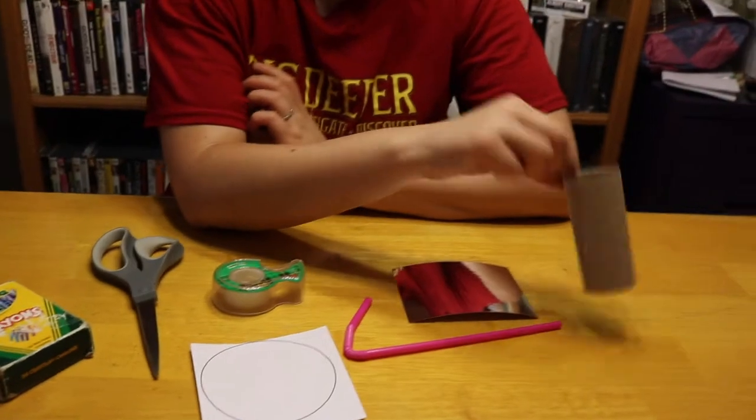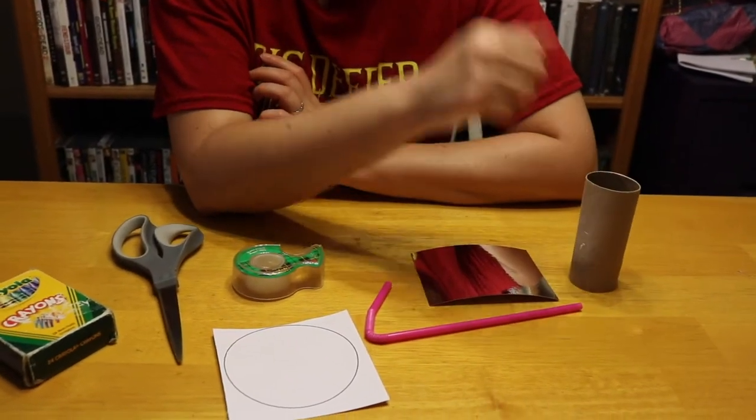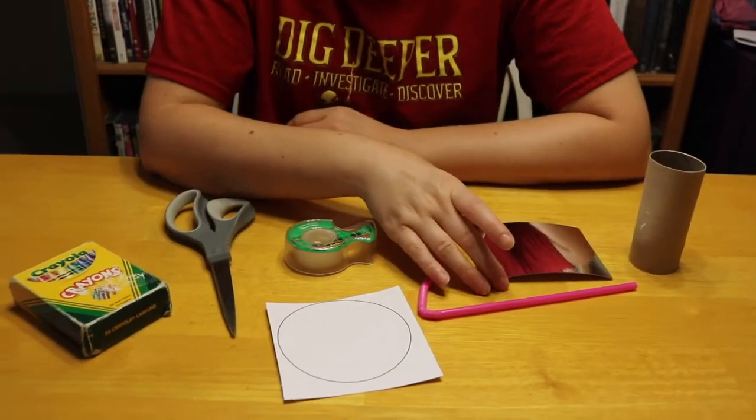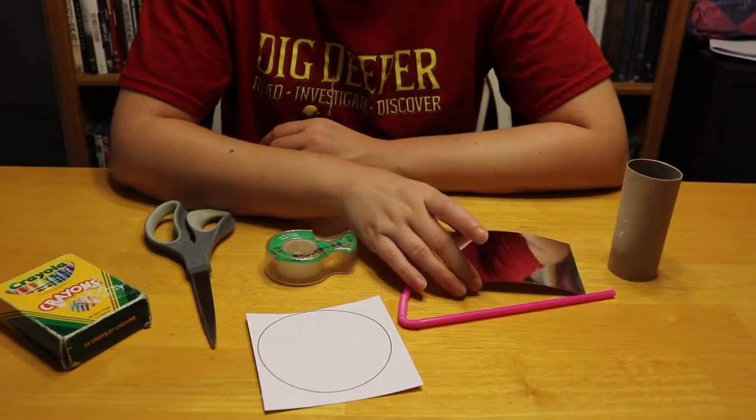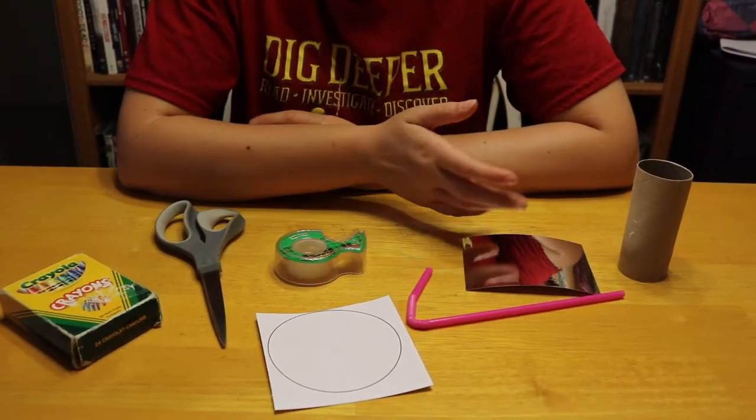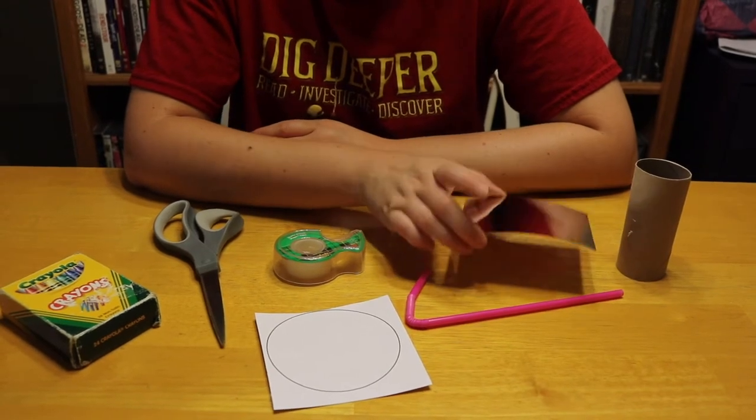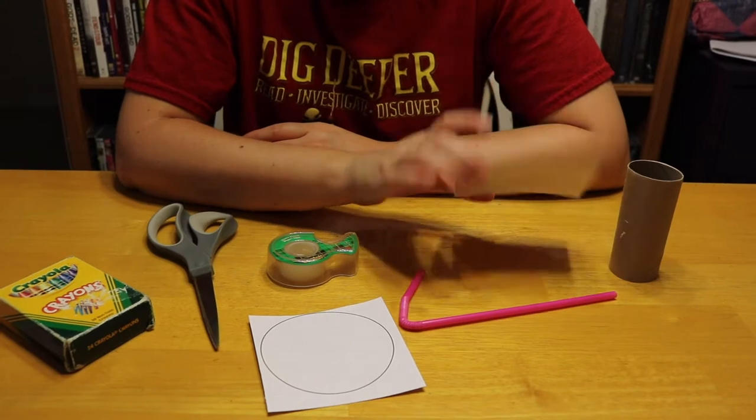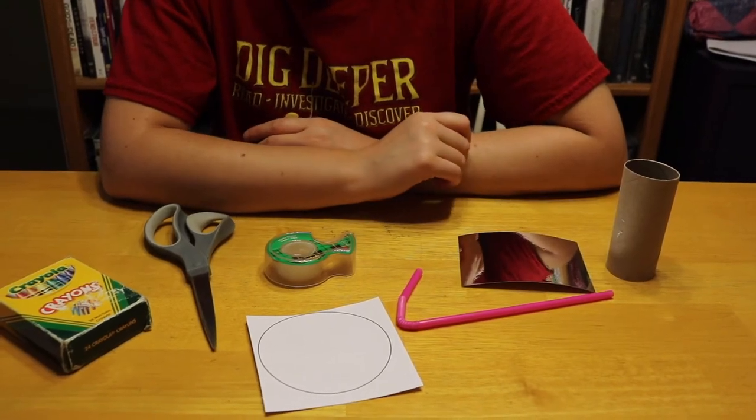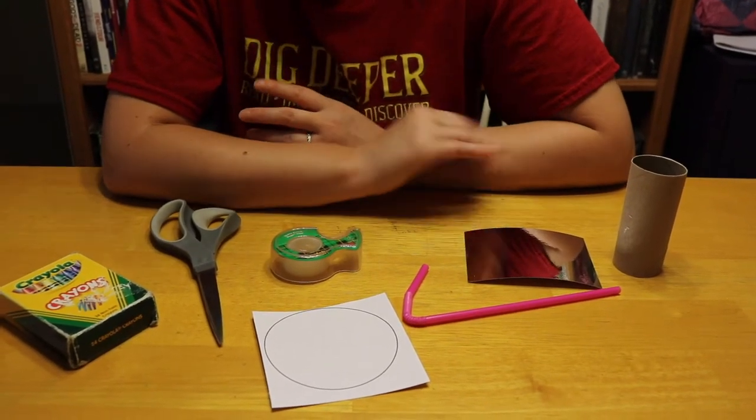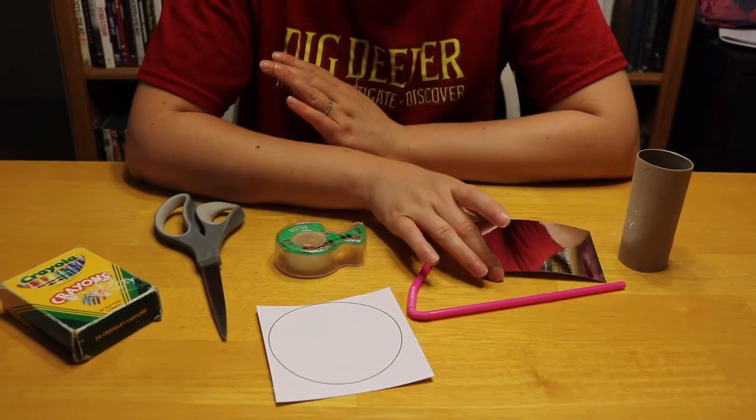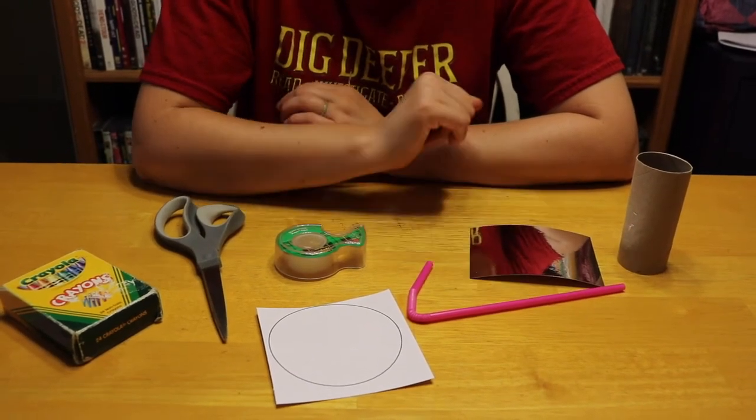So you need a toilet paper roll or a paper towel roll cut a little bit shorter. You'll need some kind of shiny paper. This is just mirrored paper, it's a little thick. You could put foil on a piece of paper or you could put foil on a piece of cardstock. Something that's reflective that you can see yourself in.